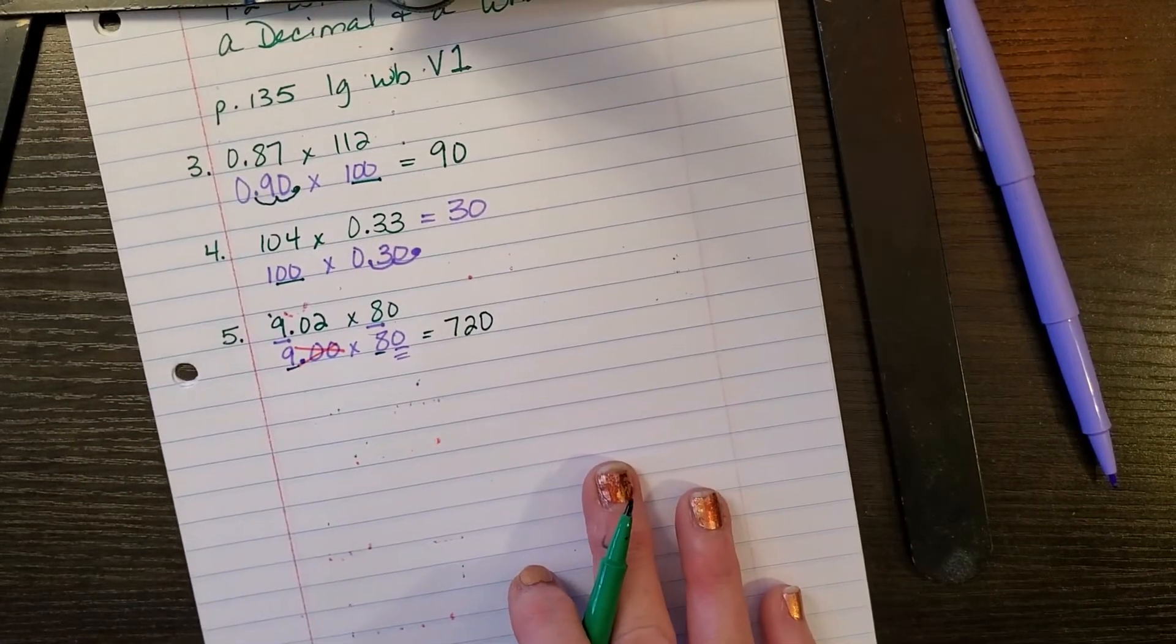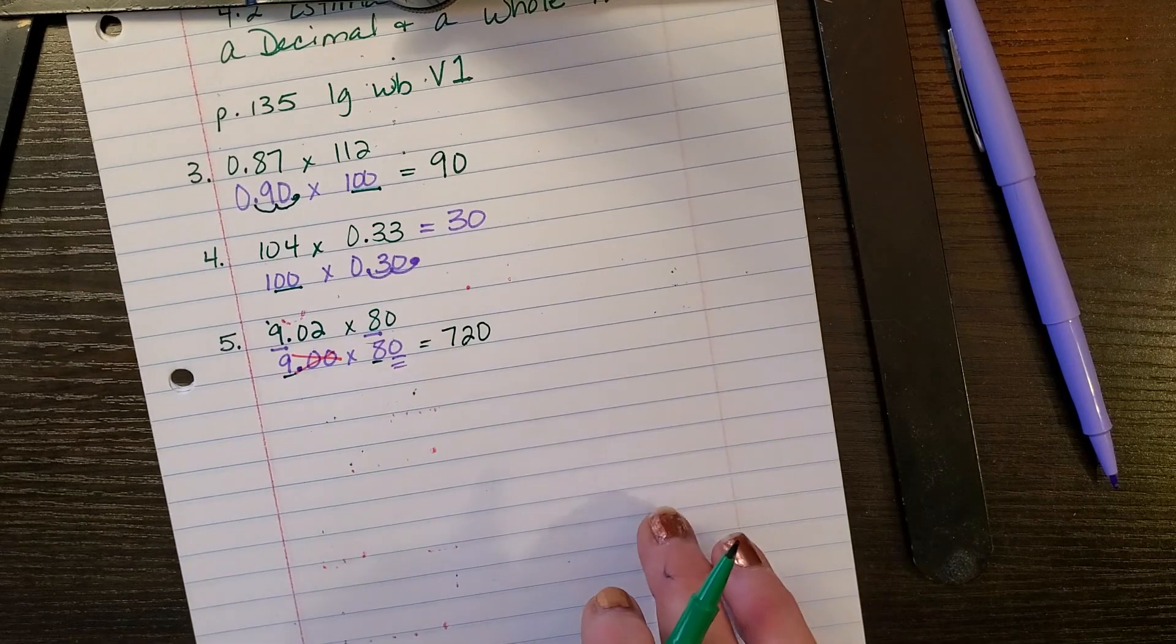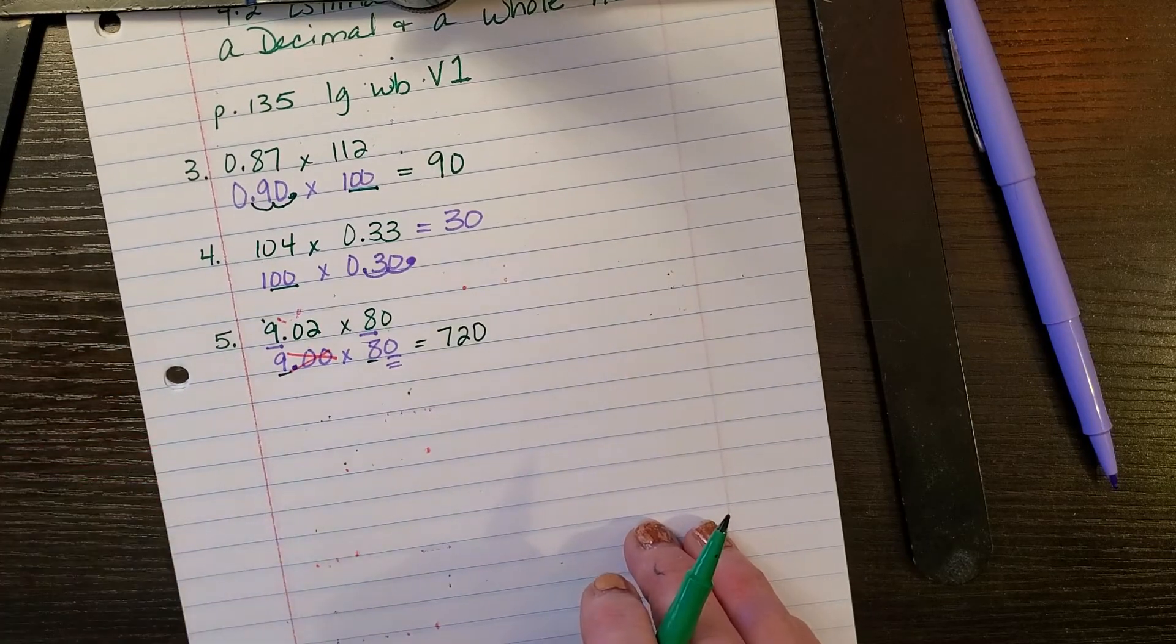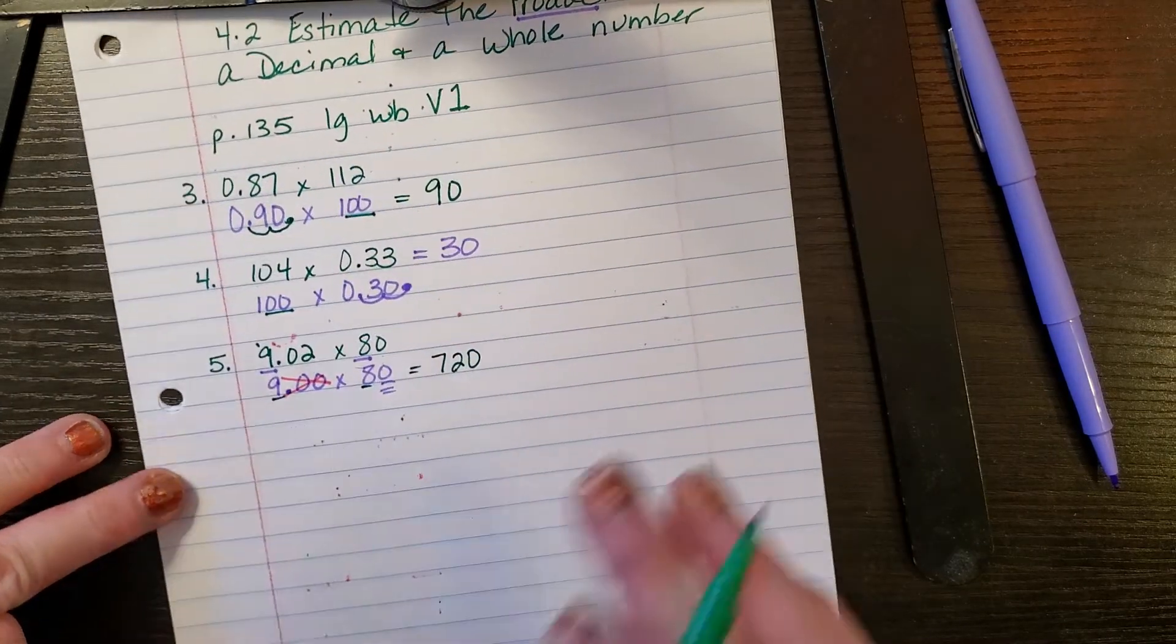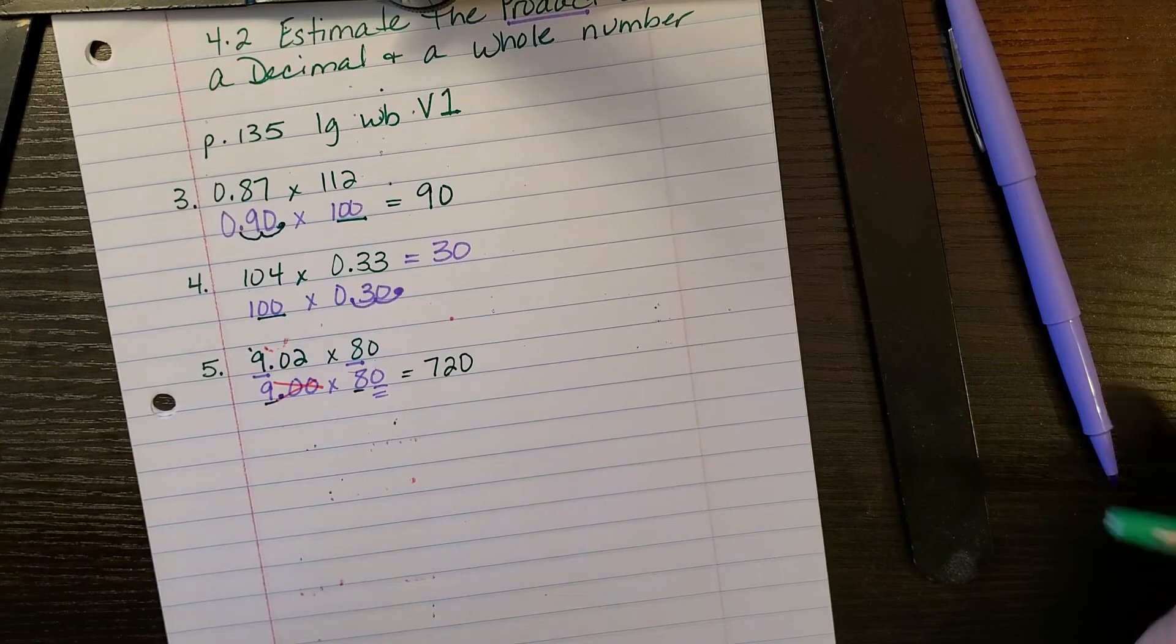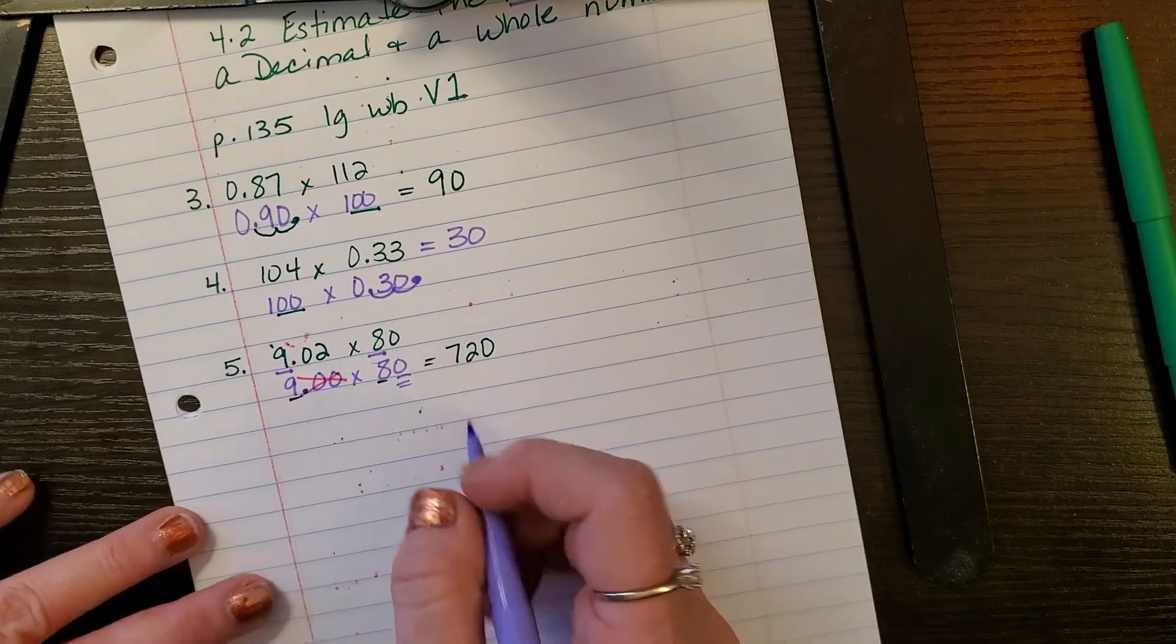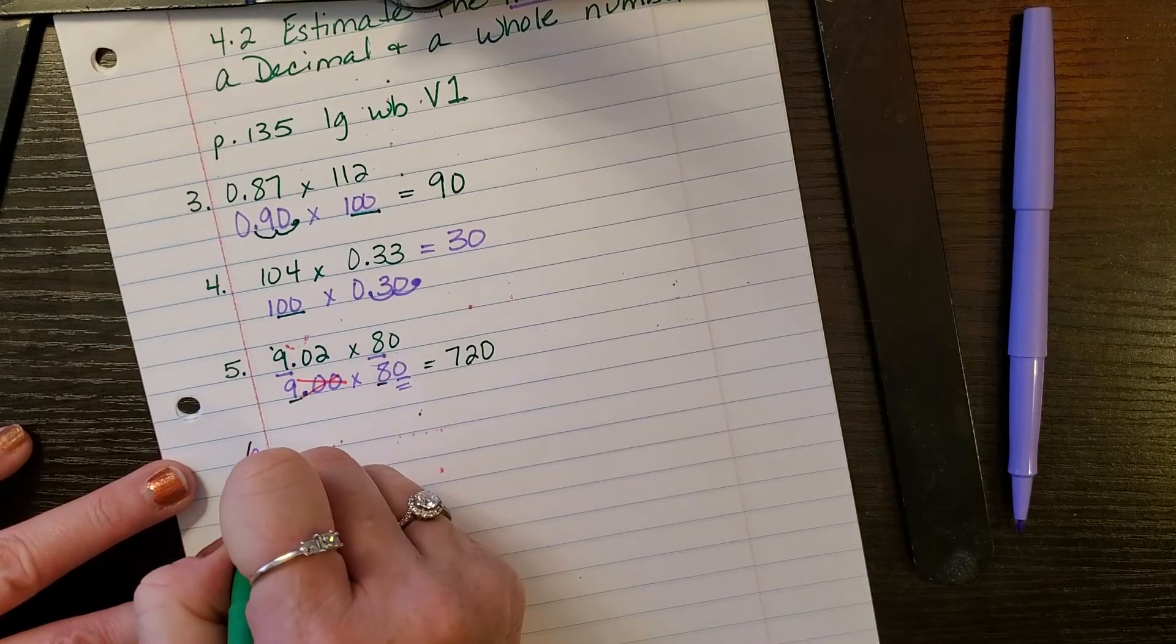This shows you understanding of manipulating numbers, of changing numbers. And if you understand how to change numbers by using compatible numbers or by rounding, this is easy. If you don't quite understand how to change these numbers, you may need to ask your teacher in open hours for further clarification. Okay. Here's number six.